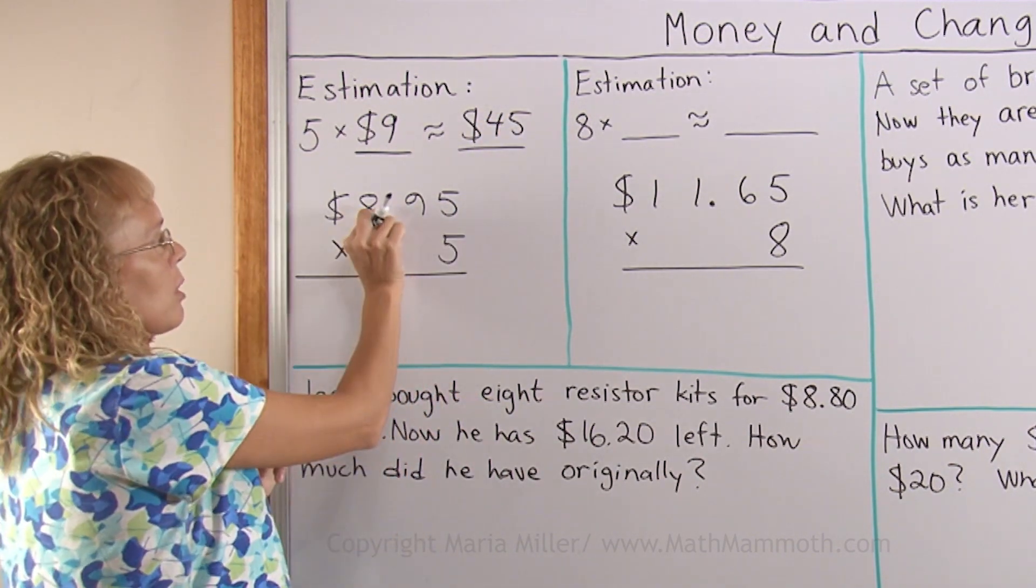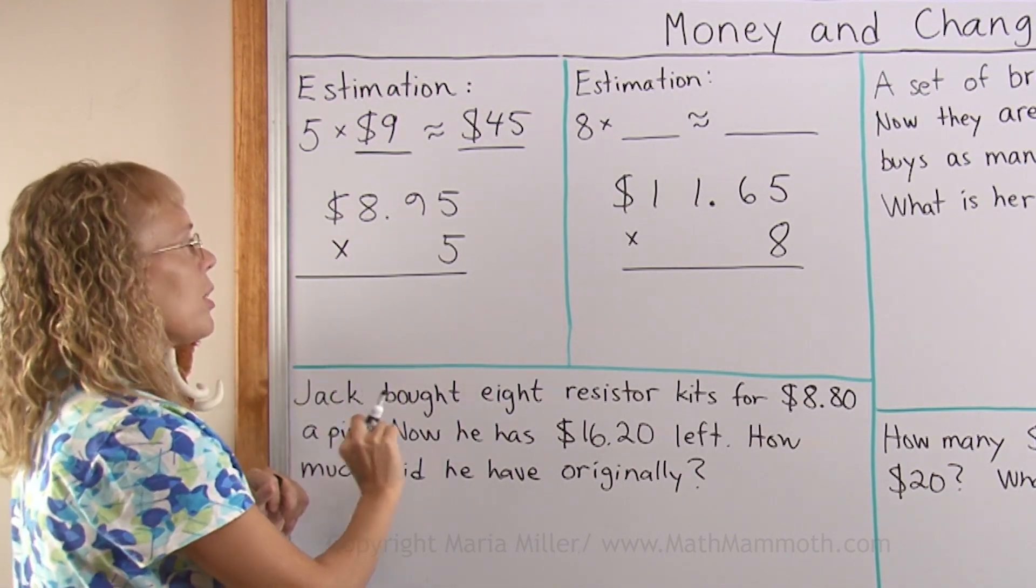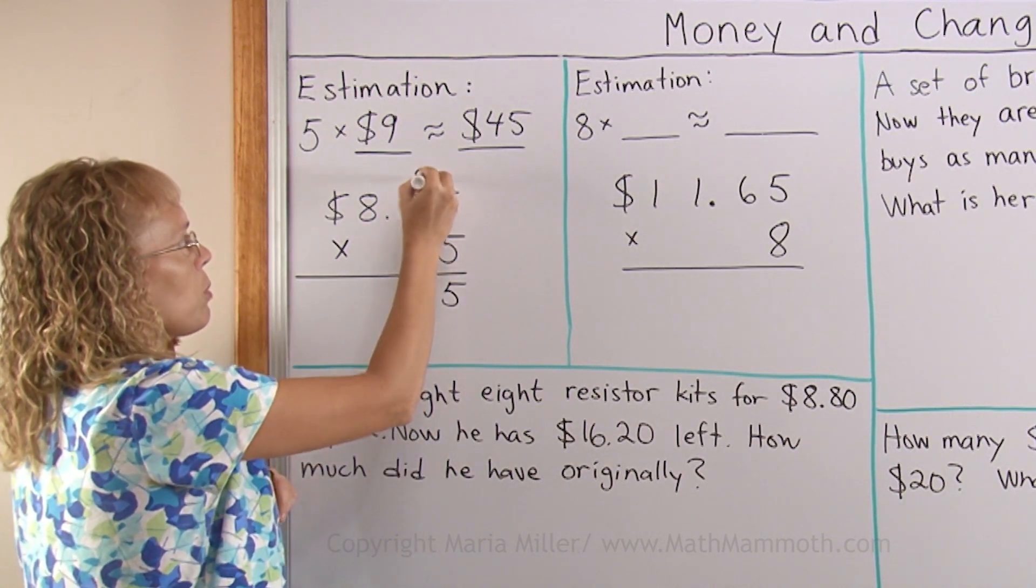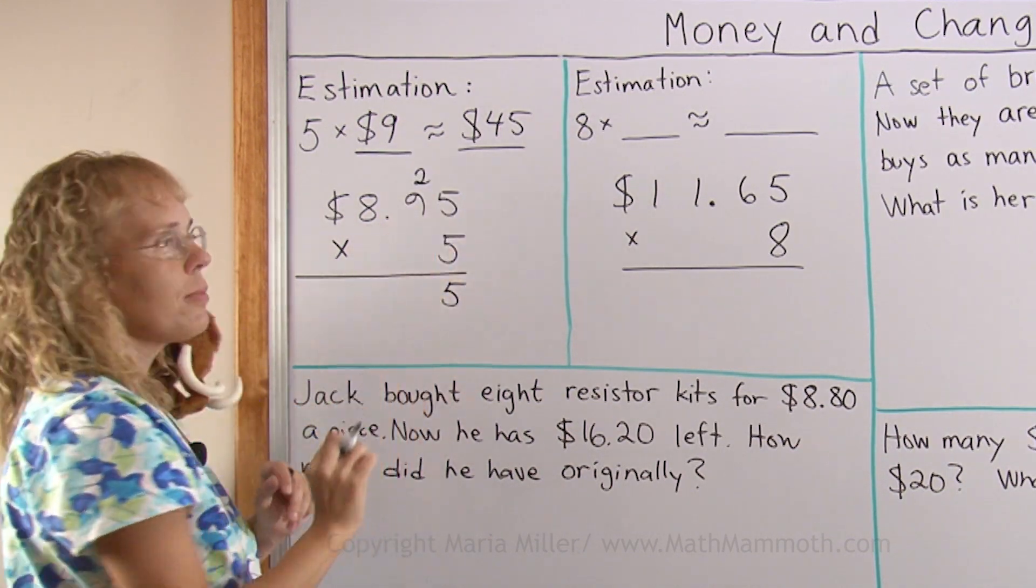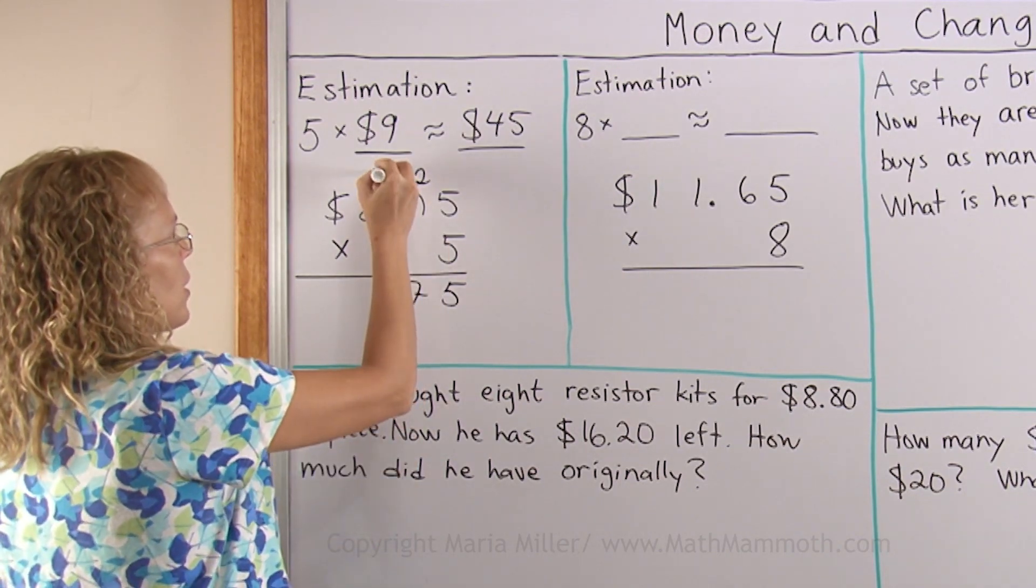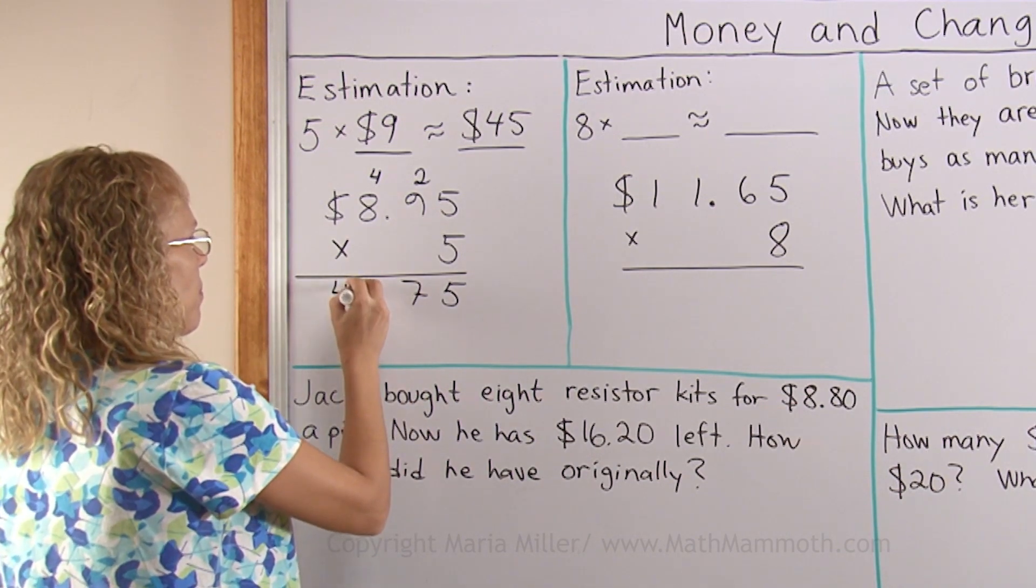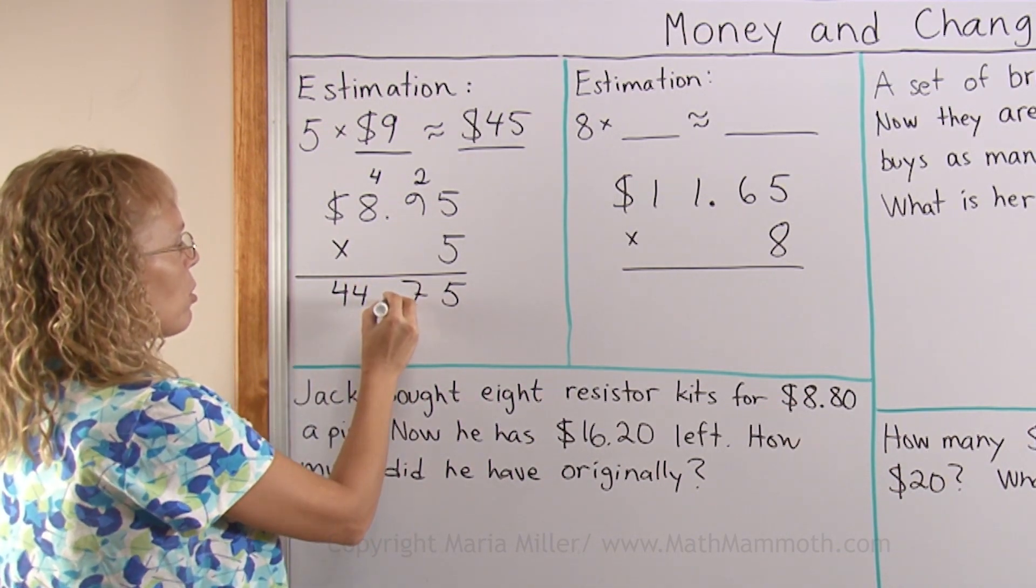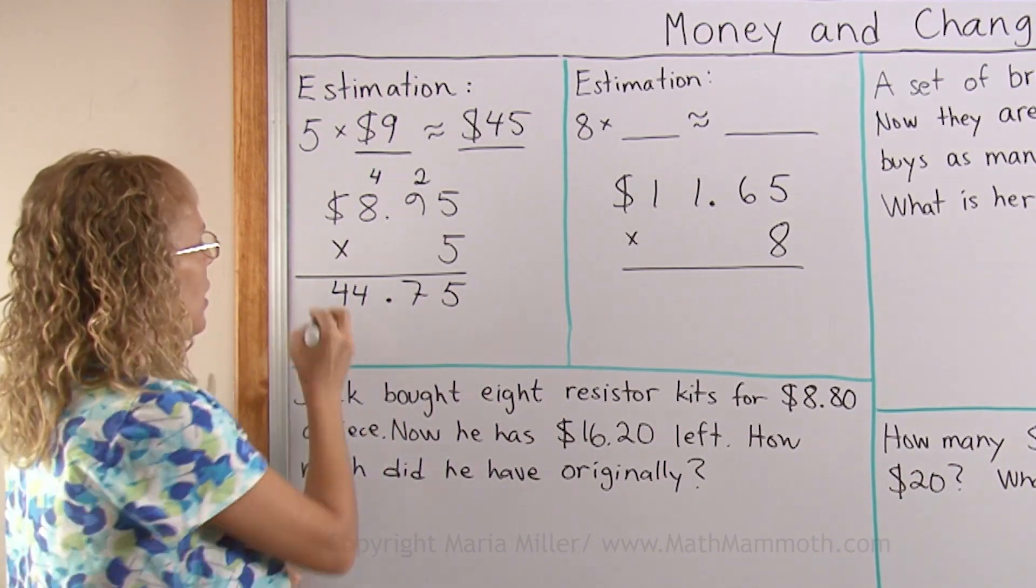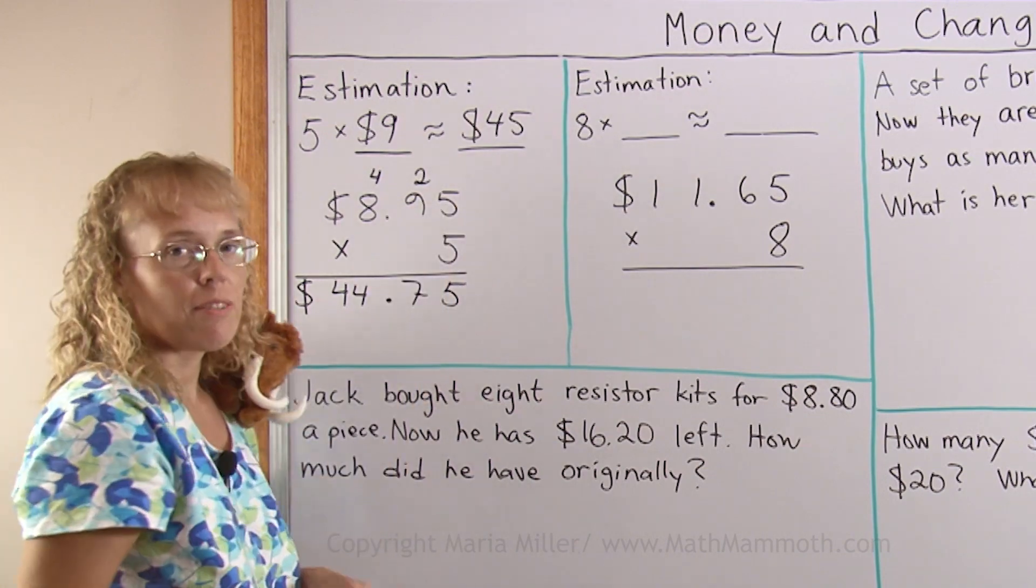You multiply as if there was no decimal point and then in the end you put the decimal point in the answer. 5 times 5 is 25 and carry the 2. Then 5 times 9, 45 plus 2, 47, carry 4. 8 times 5 is 40 plus 4 is 44 and the decimal point goes here so that we have the two digits for the cent amount. $44.75 which is close to this so everything should be right.